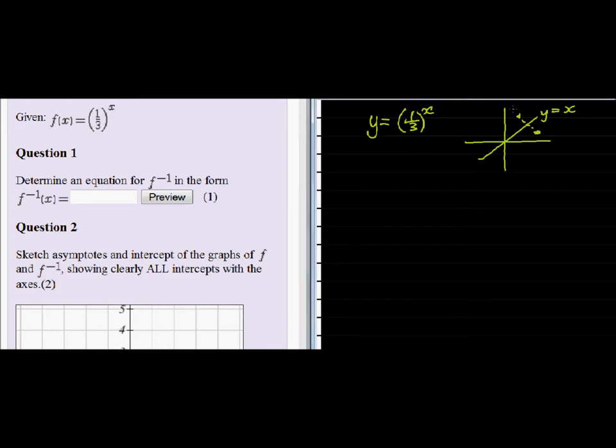If this point used to be (x, y), it will now be (y, x), which means the x and y values swap around. So we swap the x and y: x = (1/3)^y. In order to solve this, we are going to have to solve for y using logarithms.